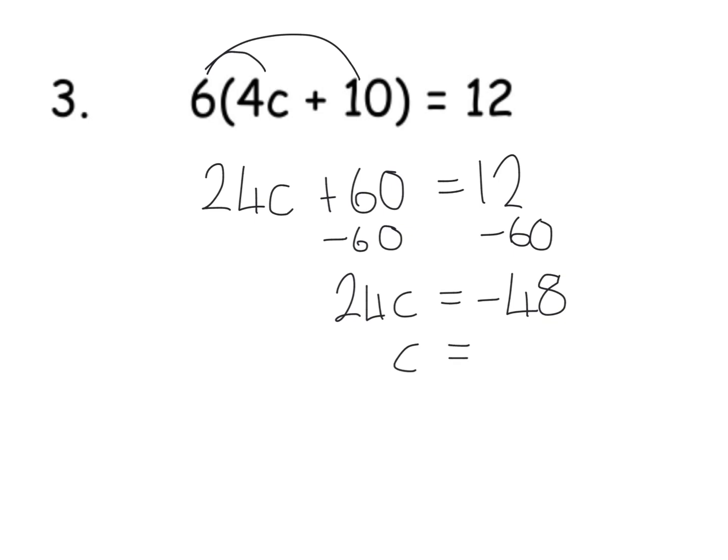And then if I divide that by 24, it goes in exactly twice. But a negative and a positive—negative always wins. So I've got negative 2. C equals negative 2 in this one, so we can have negatives involved as well.